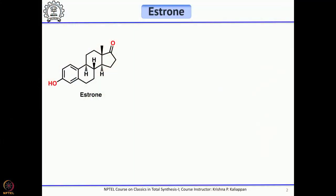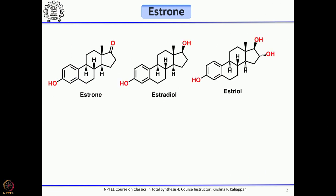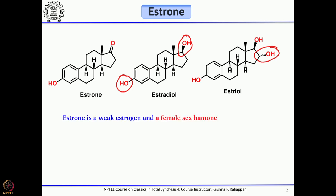Today we will move to another steroid called estrone. This is a female sex hormone, as you know — one of the three female sex hormones: estrone, estradiol, and estriol. If you look at estrone and estradiol you can see the carbonyl group is reduced. There is already a hydroxyl group in the form of a phenol in the A ring, and in addition estradiol has one more hydroxyl group. These are the three estrogen molecules, but we will talk only about the total synthesis of estrone today.